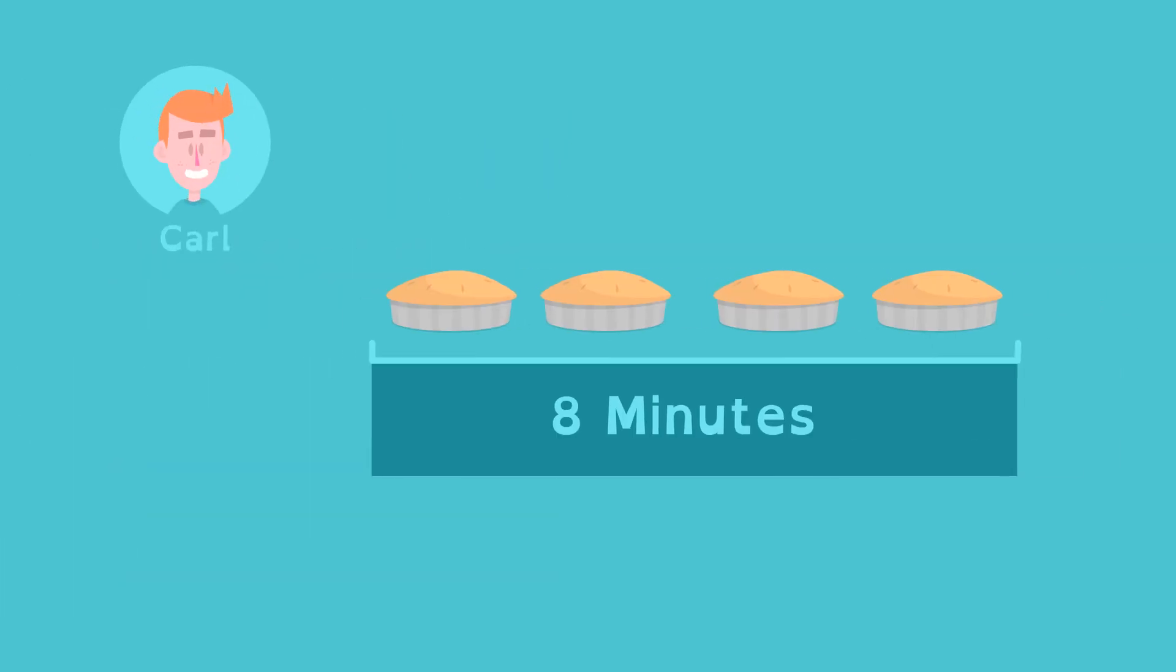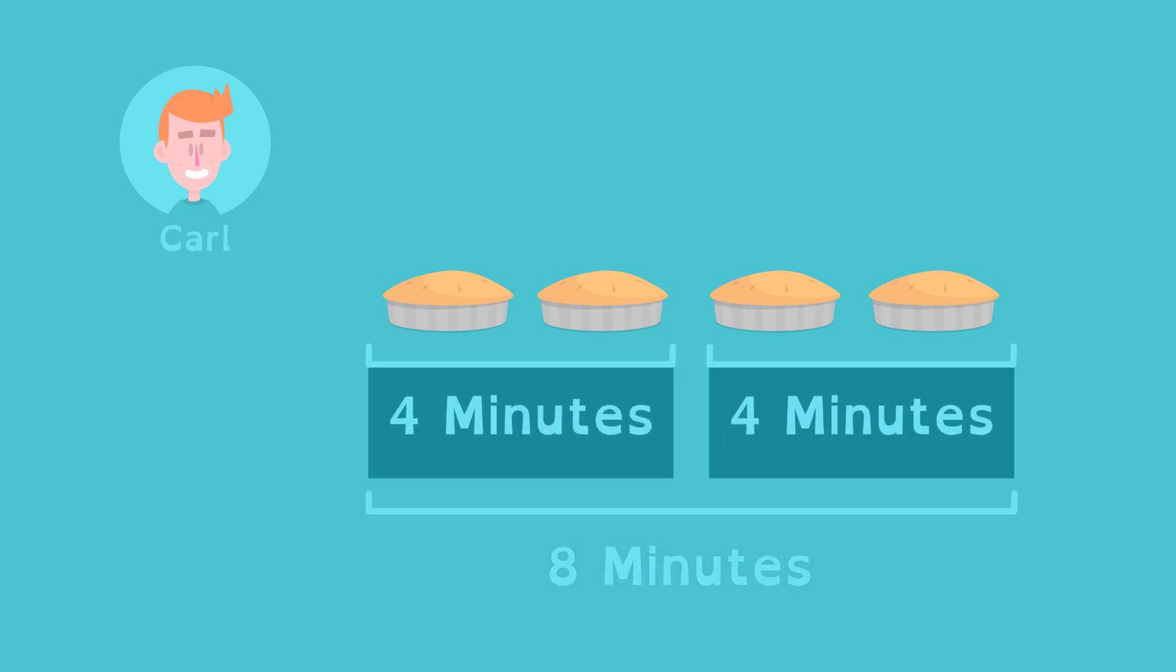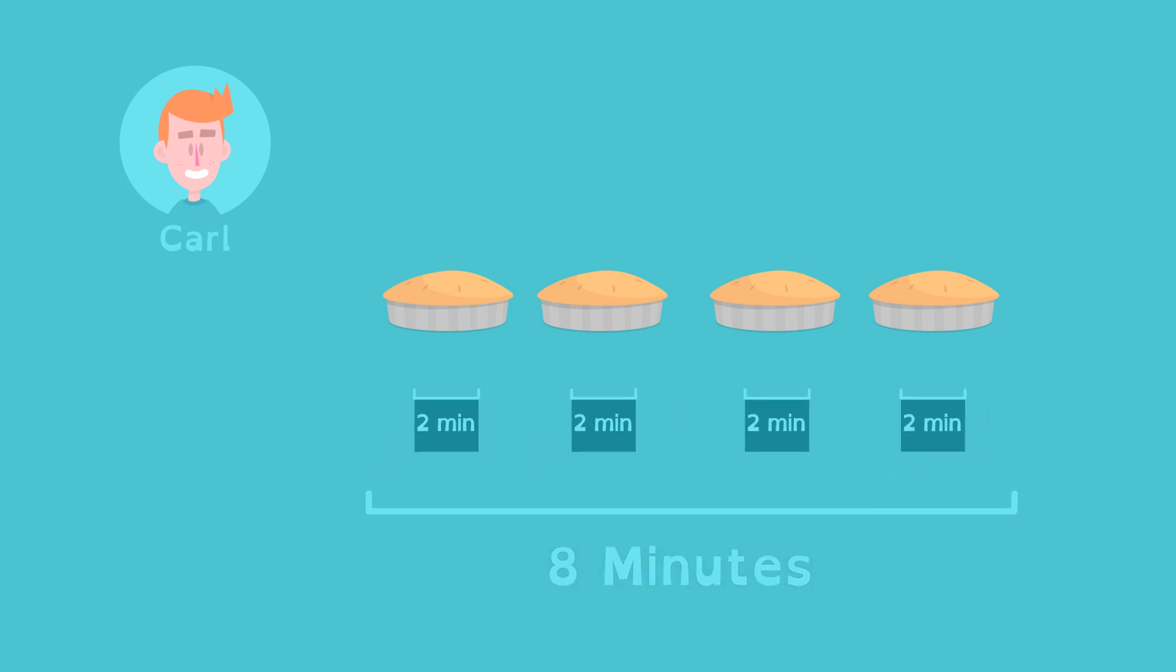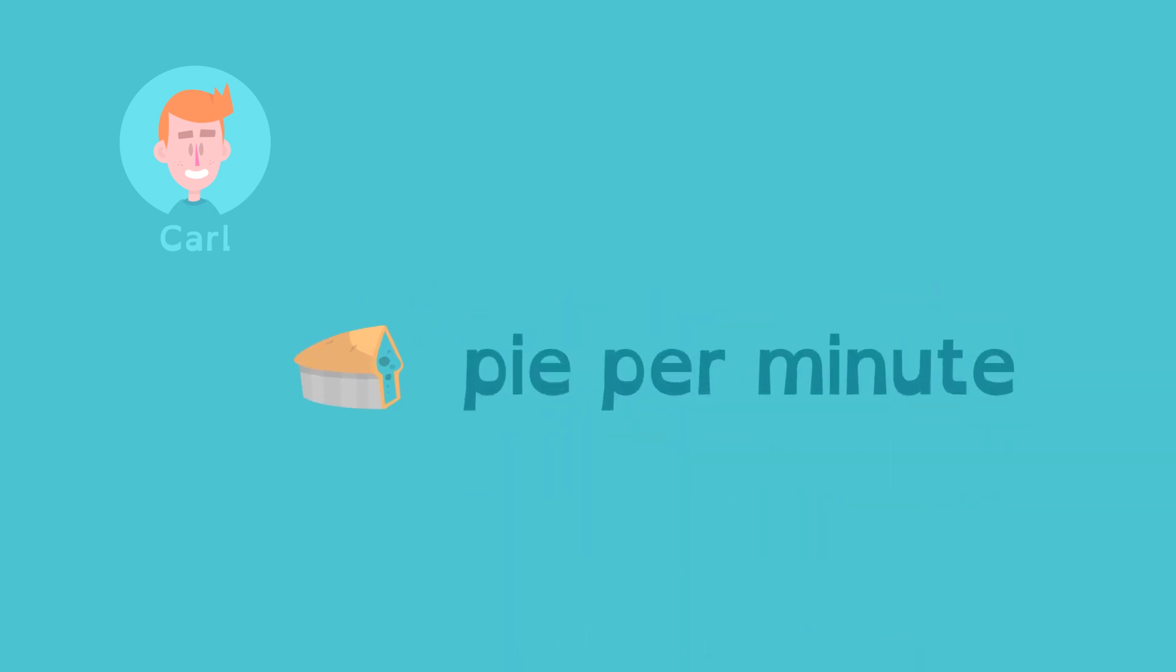If Carl eats four pies in eight minutes, then he can eat two pies in four minutes, one pie in two minutes, or half a pie in one minute. This is Carl's unit rate, the ratio of the number of pies and time in minutes.